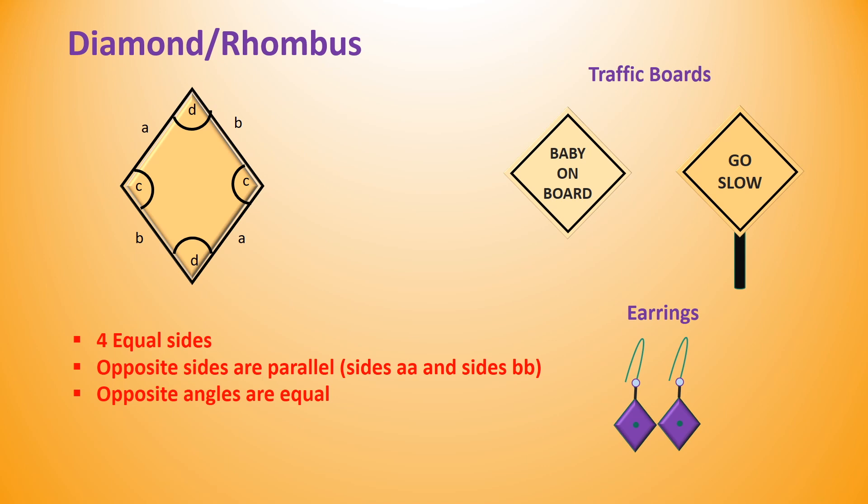Diamond or rhombus is another quadrilateral 2D shape. Diamond has four equal sides. Opposite sides of diamond are parallel. Opposite angles of diamond are equal.